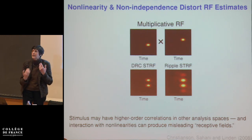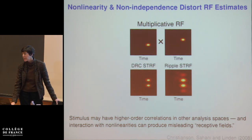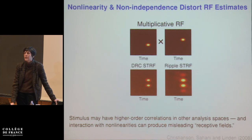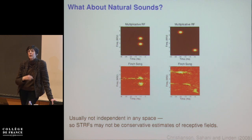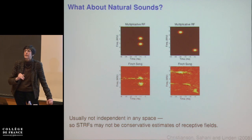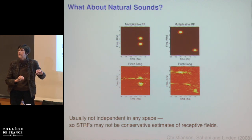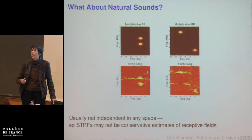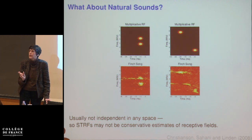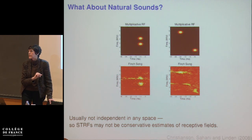This becomes a much more general consideration when trying to understand how the brain responds to natural sounds, because natural sounds like vocalizations are not independently distributed in any space. So if we estimate what a neuron is doing by looking at its responses to natural sounds — obviously useful in some settings — it's not guaranteed to give you a conservative estimate of what sounds the neuron responds to. Higher order correlations in the stimulus can interact with nonlinearities in the neuron's response function to produce essentially artifactual regions of apparent sensitivity in the receptive field.